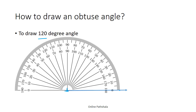The baseline of the protractor overlaps one of the arms, that is the horizontal line. Now we start counting from zero: 10, 30, 90, 100, 110, 120. So 120 is our destination point. Now the last thing is to draw a line between the two points to complete the angle.